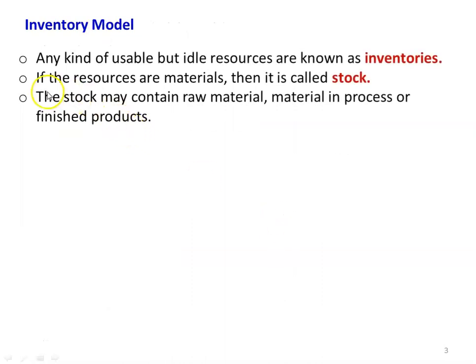Inventory model — what is inventory? Any kind of usable but idle resources are known as inventories. This is very much related with business enterprises and also manufacturing units. In the manufacturing unit, the inventory may be at different levels: we have raw material as inventory, finished product as inventory, and material under process as inventory. In a big shopping mall or departmental store, different items are stored and a certain quantity of each item is maintained.